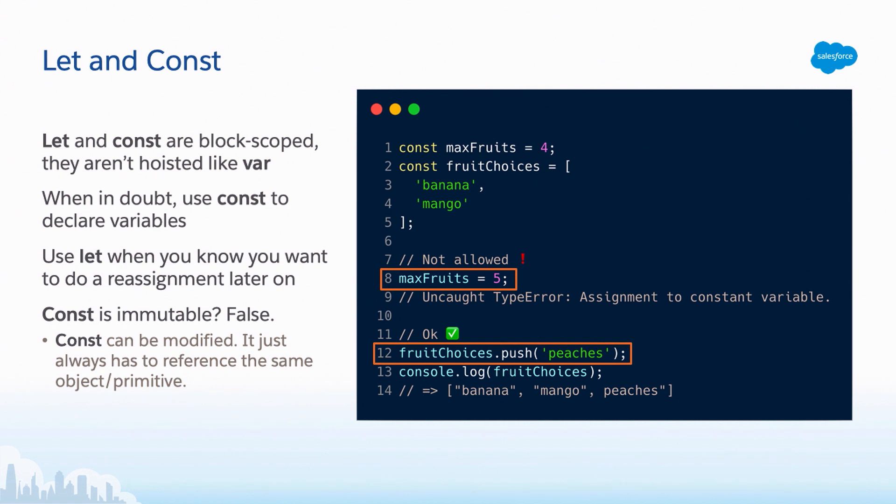Moving on to let and const. If you're already developing in JavaScript actively, you're probably using these daily in your code. But let and const are block scoped. They aren't hoisted like var. We're going to show an example in the next page that kind of shows what that actually means. Sometimes it's hard to know when that can make a difference. And when in doubt, I usually say to use const when you're declaring variables. People will have different opinions on this. And use let when you know you want to do a reassignment later on. There is a common misconception about const that it's immutable. It's kind of false. So const can be modified. It just always has to reference the same object or primitive that it was declared with.